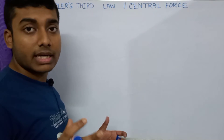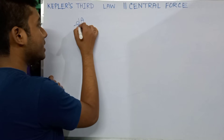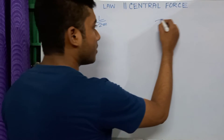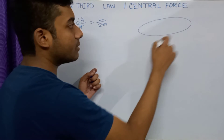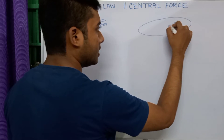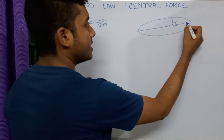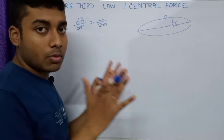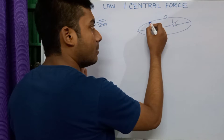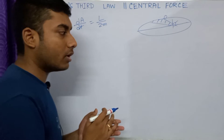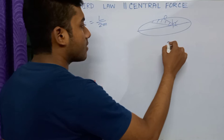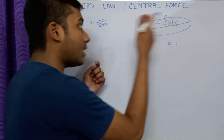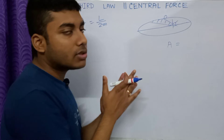We know from Kepler's second law that dA/dt equals L over 2M, where L is the angular momentum of the body. Suppose we are considering an elliptical orbit — a planet revolving around the sun in the solar system. I am briefly deriving Kepler's second law here so you can easily connect the two things, and then I will derive Kepler's third law.